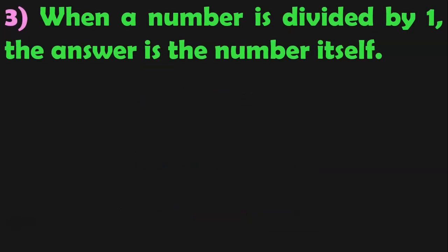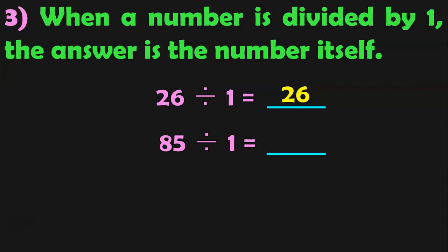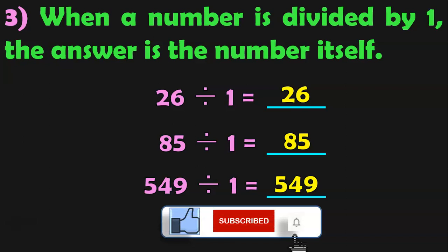The third property: when a number is divided by 1, the answer is the number itself. For example, 2 divided by 1 equals 2, because 1 into 2 is 2. Let us see more examples. 26 divided by 1 is equal to 26. 85 divided by 1 is equal to 85. Taking a 3-digit number: 549 divided by 1 is equal to 549, because 1 into 549 gives 549. Hope you have understood the third property.